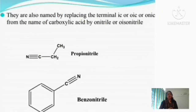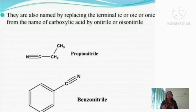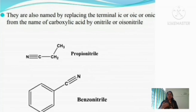Another way of naming cyanide or isocyanide compounds is as derivatives of carboxylic acids — replacing the terminal '-oic acid' with '-onitrile' or '-isonitrile.' For example, CH₃CH₂CN is a three-carbon cyanide; the corresponding acid is propionic acid, so the '-onic acid' is replaced by '-onitrile' to give propionitrile. For C₆H₅CN, the corresponding acid is benzoic acid, so it is named benzonitrile.